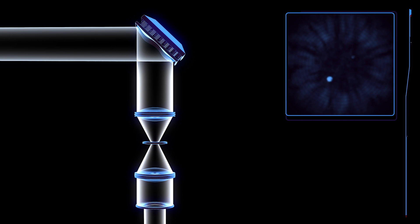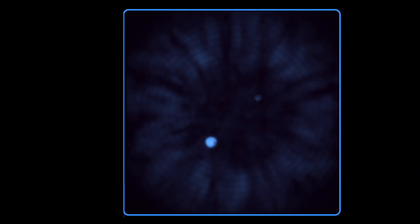Advanced software processes this data, further improving the contrast and clarity of the image. This processing makes objects more than a billion times fainter than the star visible.